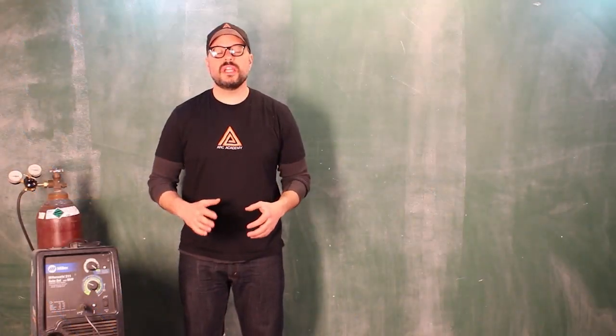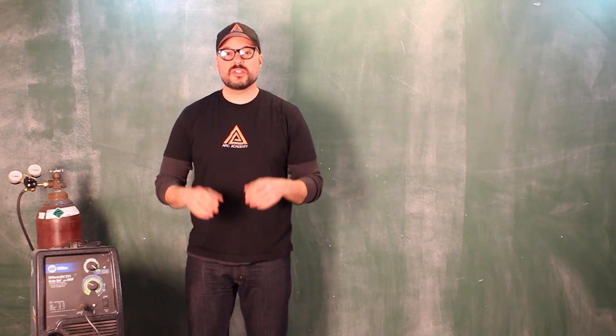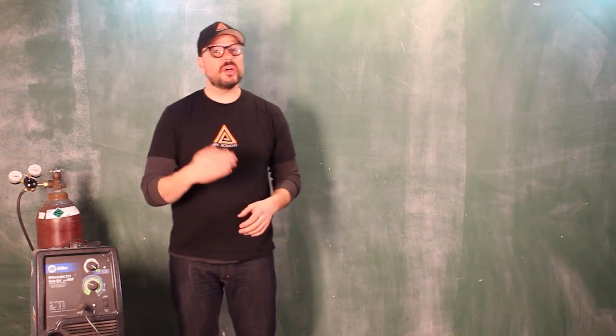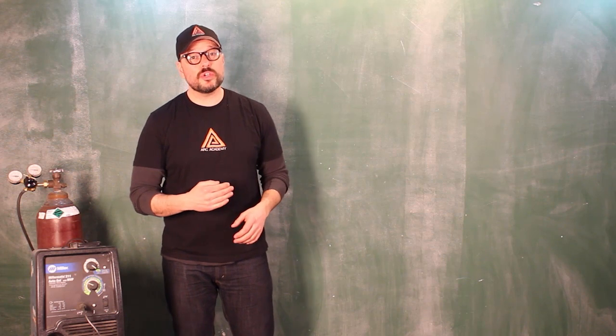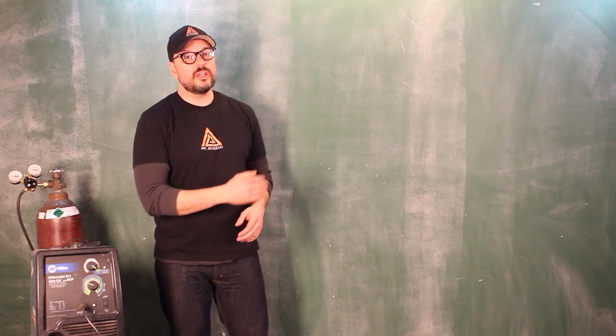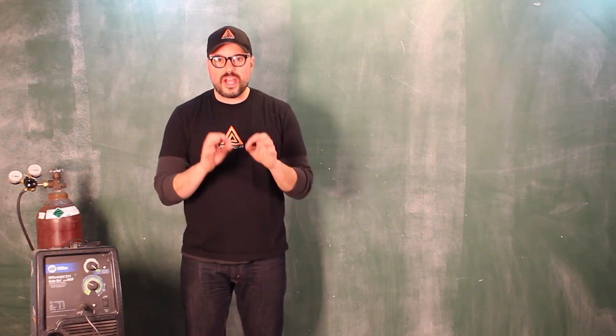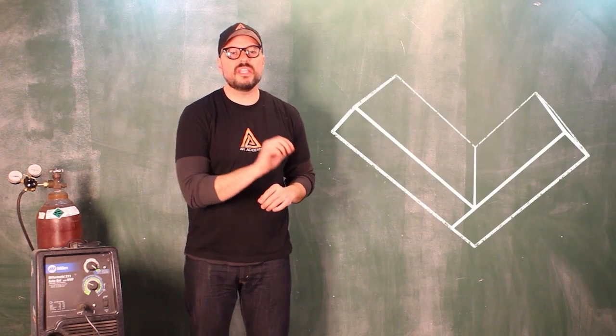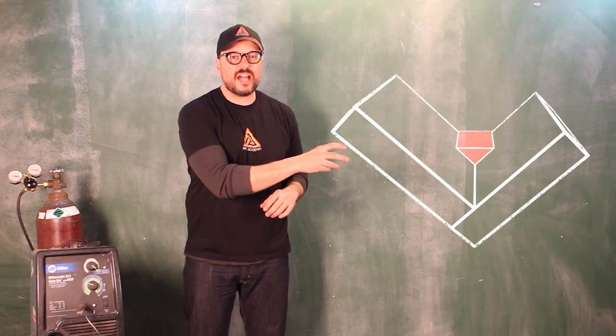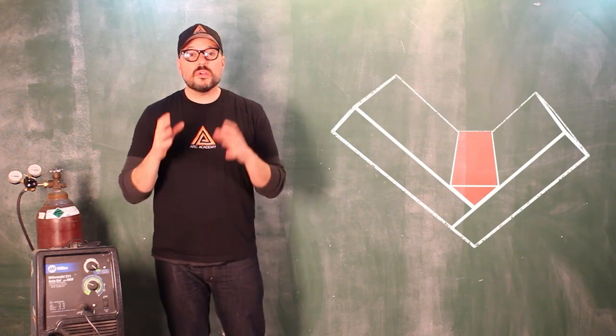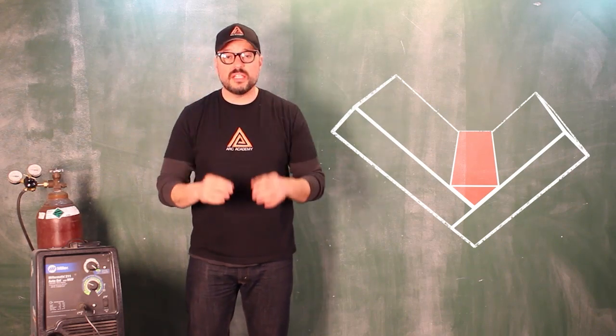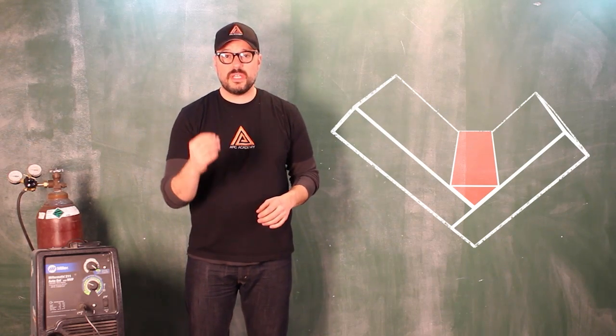A closed inner corner joint in flat position is going to be relatively similar to the butt joint or an outer open corner joint in flat position as well. The difference is you don't have the two toes. You don't have the A and C edge to follow as you're going through.